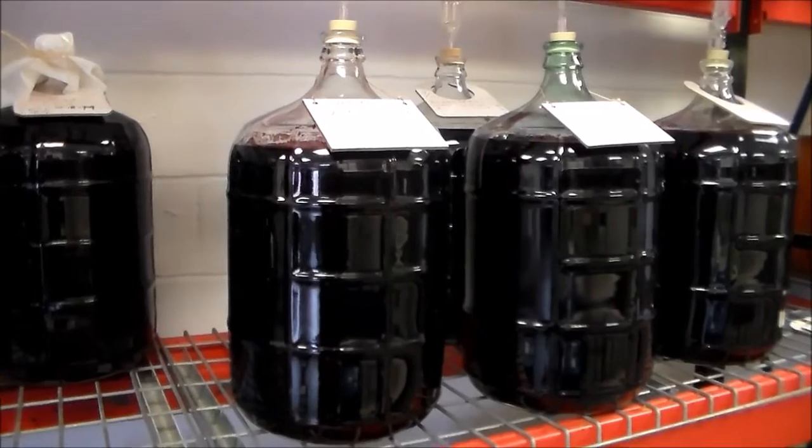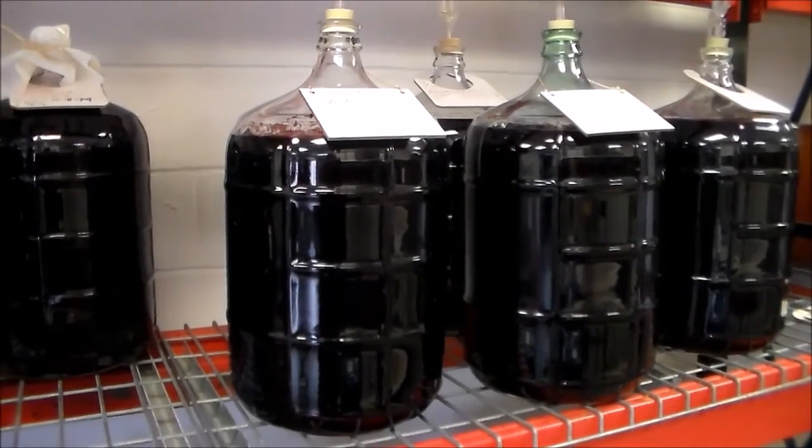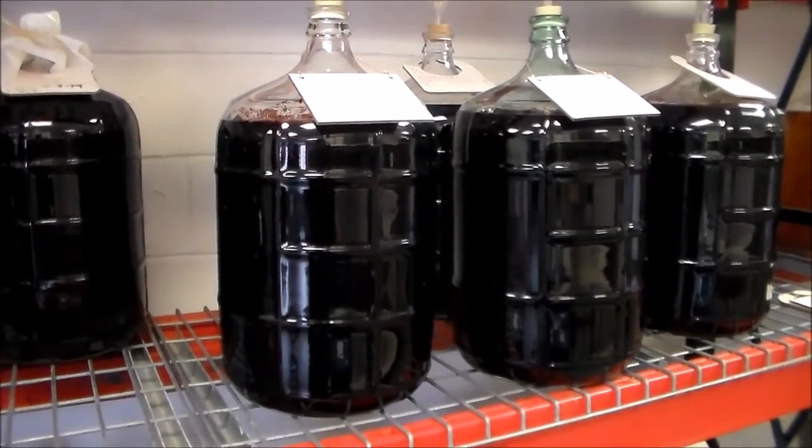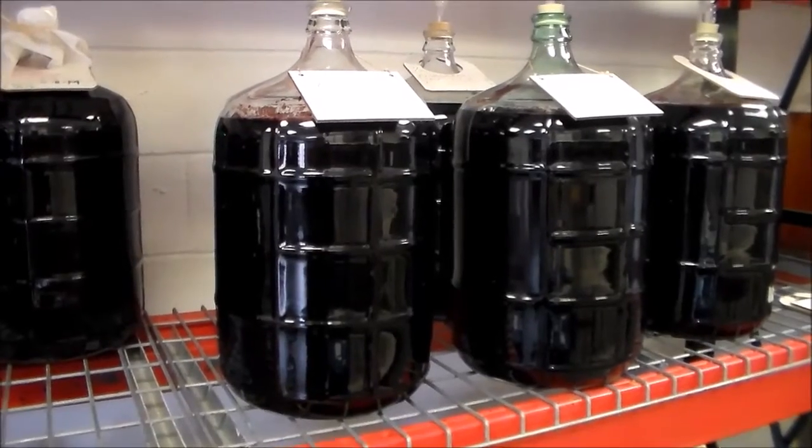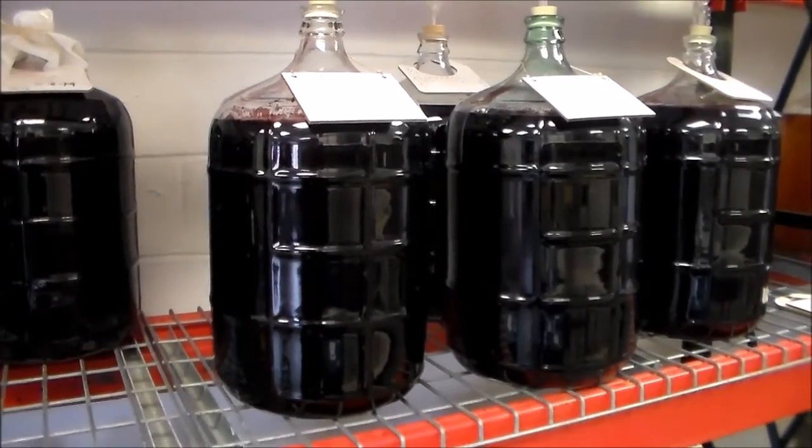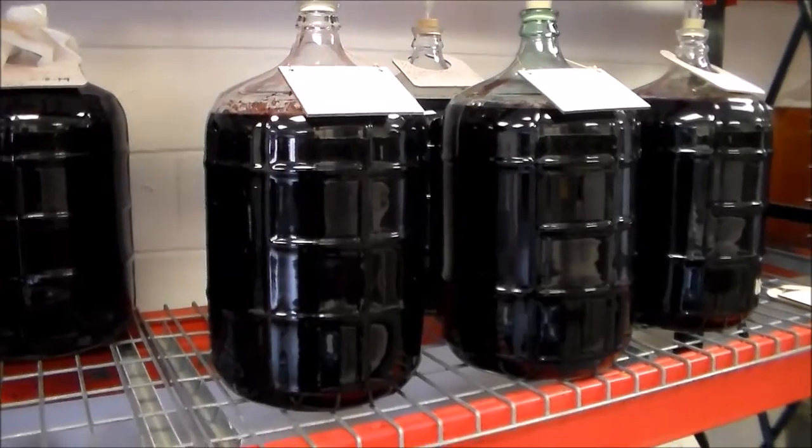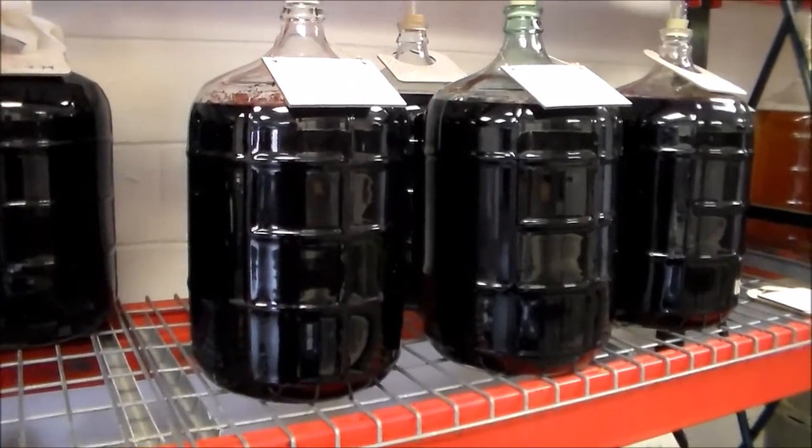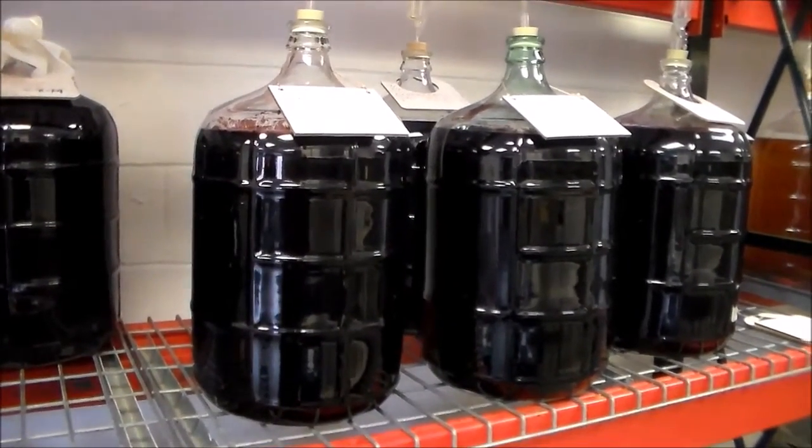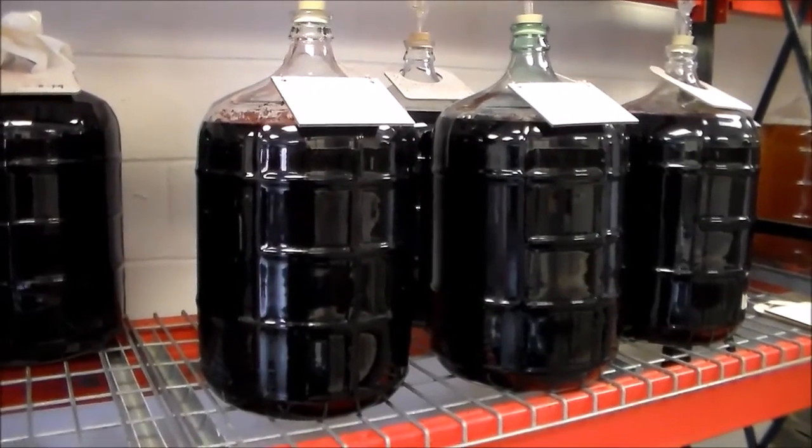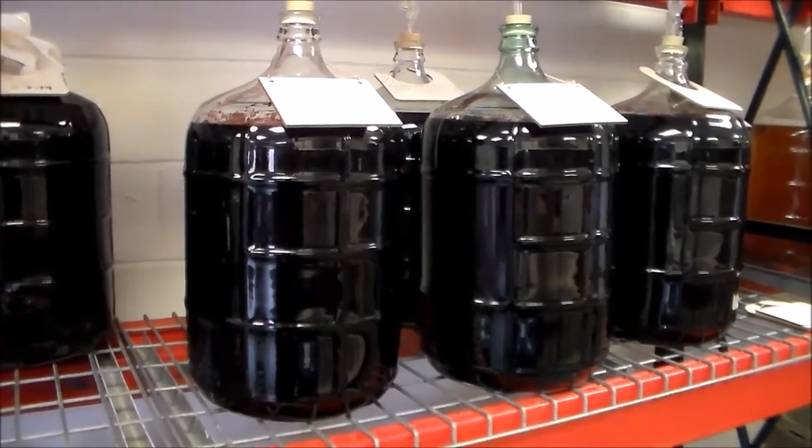And before you put your wine into the bottles and cork them, you should let the wine set for at least 24 hours. So that the agitated wine will settle and then it should be able to be bottled that way.